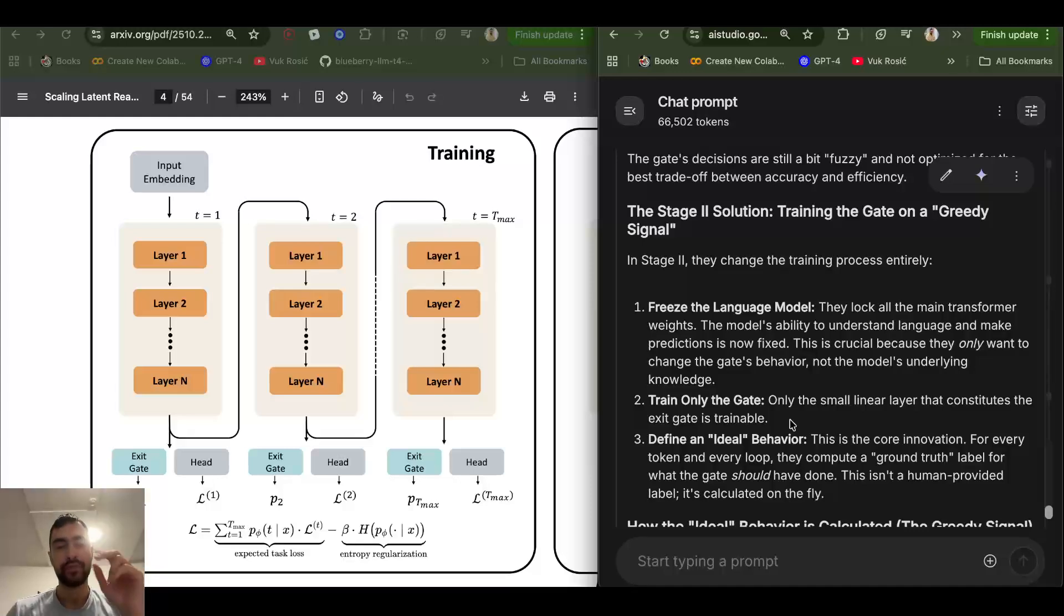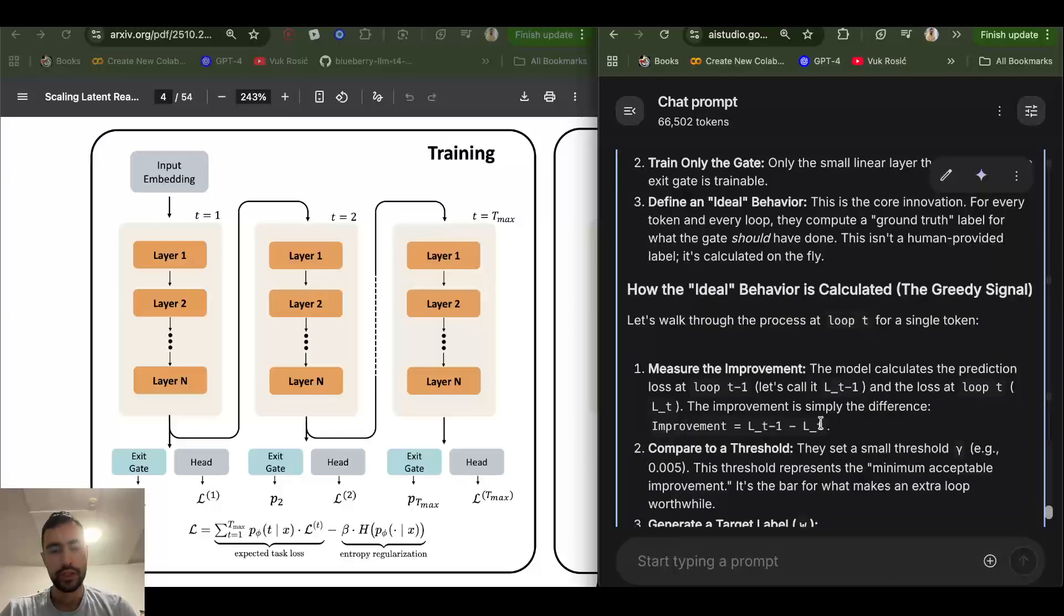Compare that to this case where first three loops have 1% chance, and the fourth loop has 97% chance. The model is very certain, very low entropy, very low uncertainty. So it will get punished in this case, they design it to be punished in this case more, in this first stage. So it will only become more certain in some amount of loops if it actually reduces loss enough that this punishment is worth it. After that, there is stage two, where they stop training the large language model itself. They just train this exit gate now.